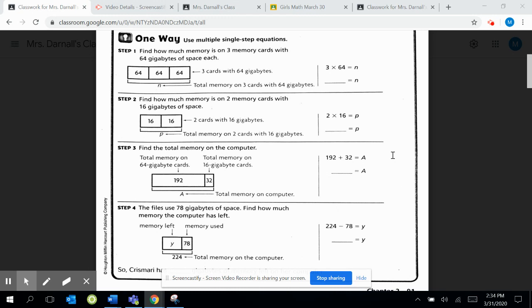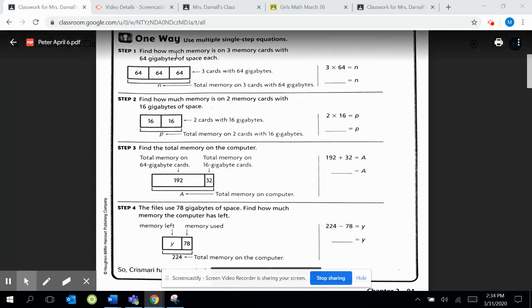This is going to be a multiple-step problem. We can see that we need to do a couple things here, and I'm going to show you one way that this problem can be done. Step one, find out how much memory is on three memory cards with 64 gigabytes of space each. Here's a picture to help us understand - the three spaces stand for the memory cards, and each of them can hold 64 gigabytes. So n equals the total amount, and to do that, we do three times 64.